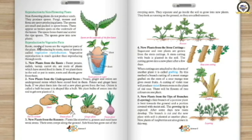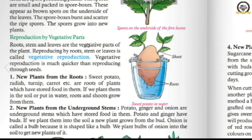Today we will learn about reproduction by vegetative parts. Roots, stem, and leaves are the vegetative parts of a plant. Reproduction by these parts is called vegetative reproduction, and it is much faster than reproducing through seeds.